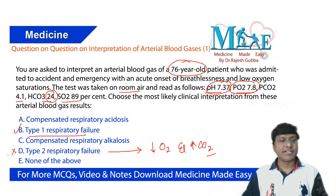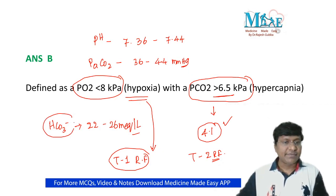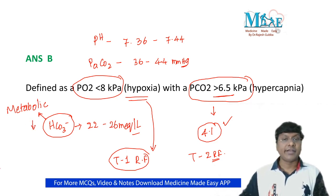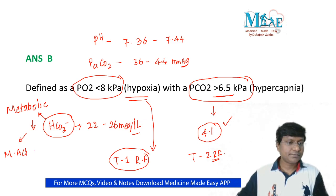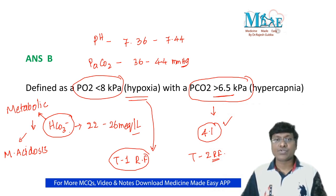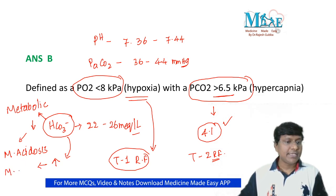Regarding the other options — compensated respiratory acidosis and compensated respiratory alkalosis — bicarbonate levels in our body decide the metabolic parameters. If bicarbonate is reduced, that results in metabolic acidosis, because bicarbonate is an alkaline substance and its reduction causes acidosis. Conversely, if bicarbonate levels are elevated, that results in metabolic alkalosis.